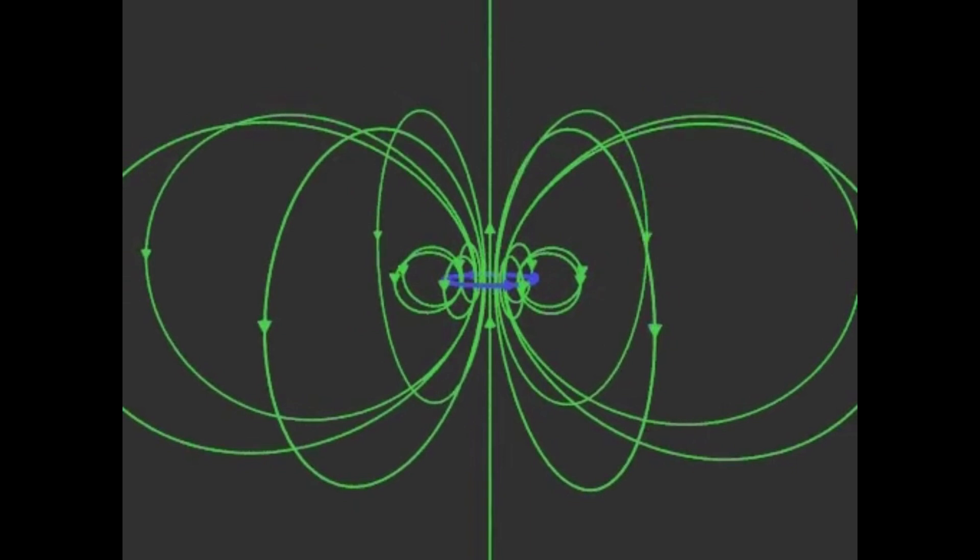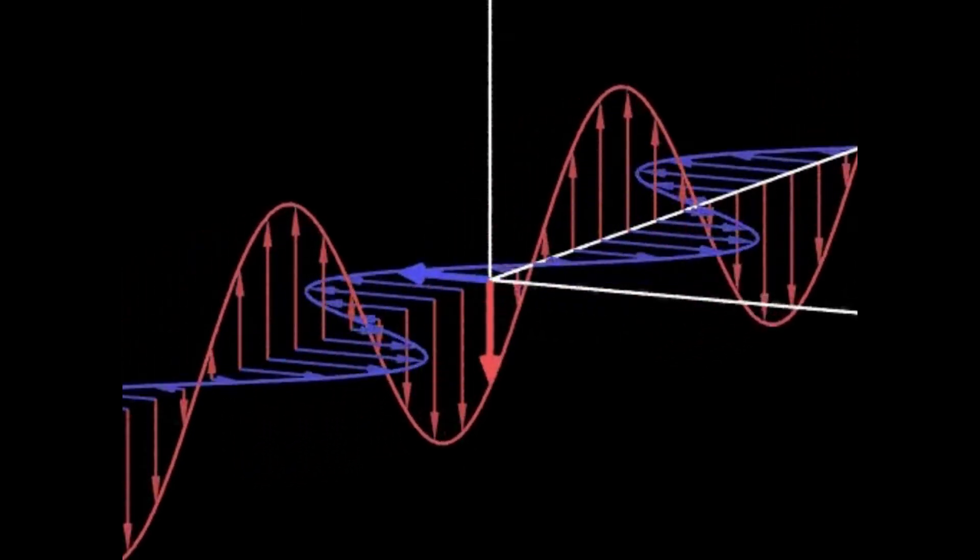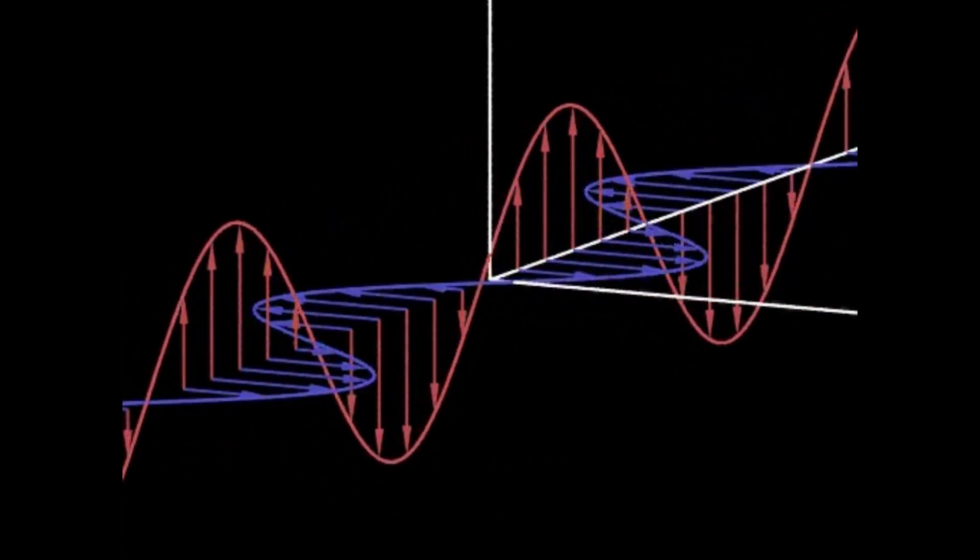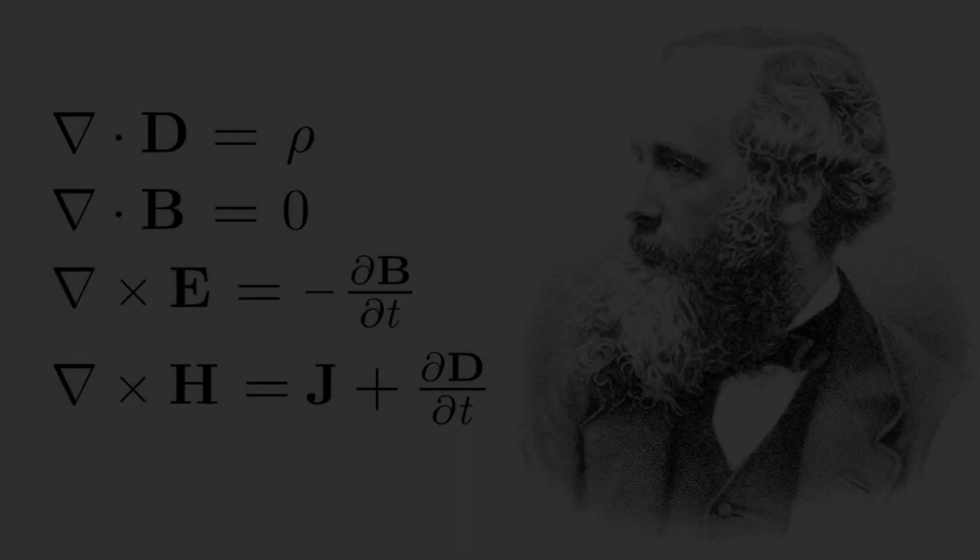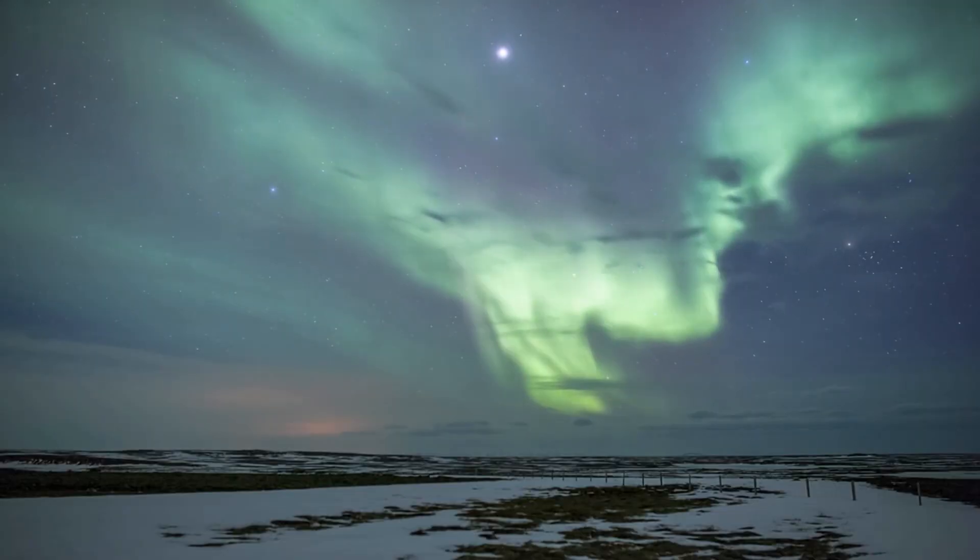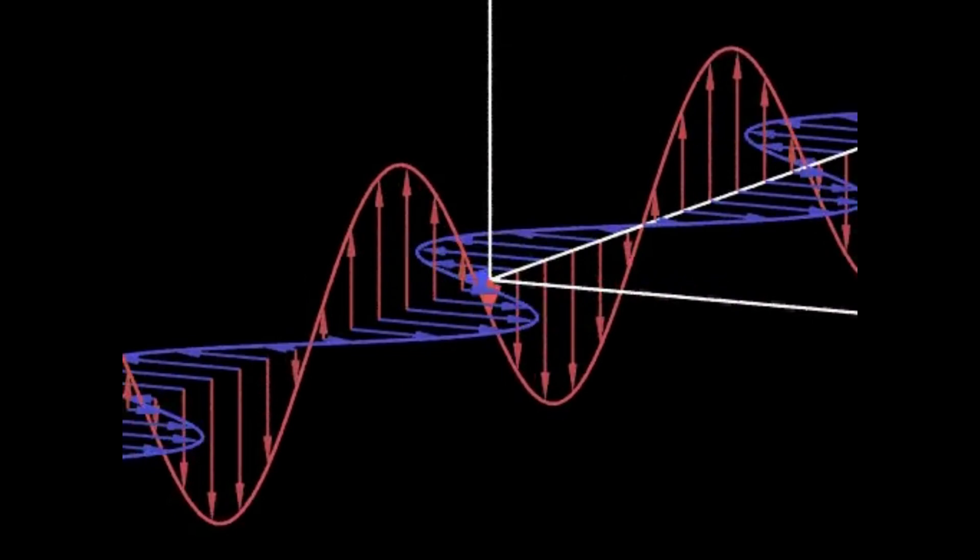Faraday couldn't write the equations, but he had the vision. Then, James Clerk Maxwell took it further. He unified electricity and magnetism into one complete theory called electromagnetism. His equations reveal that changing electric fields create magnetic fields and vice versa. The result: light itself is a wave in an electromagnetic field.